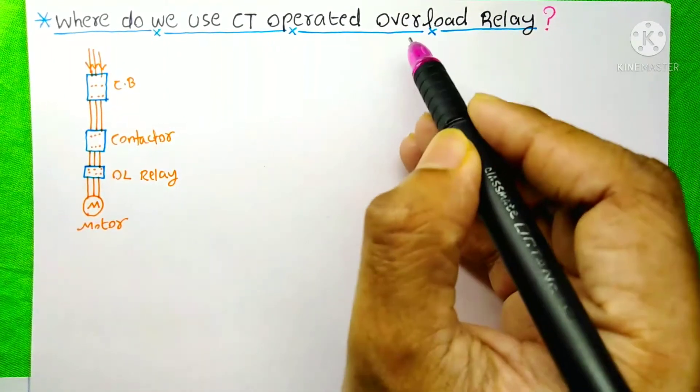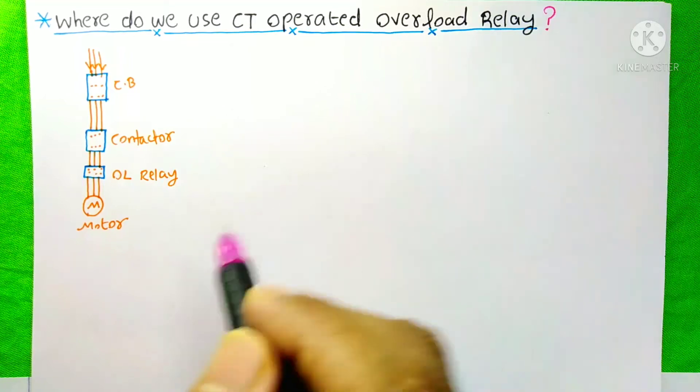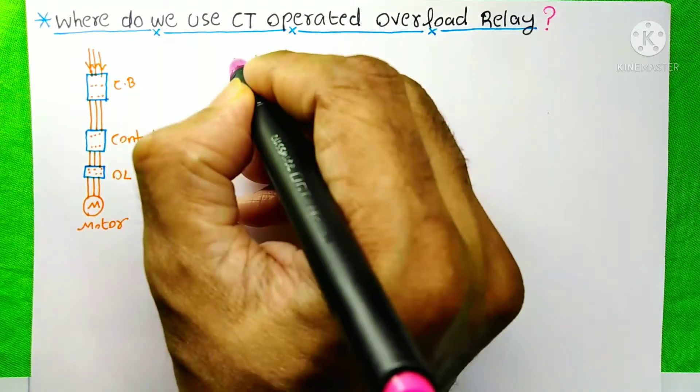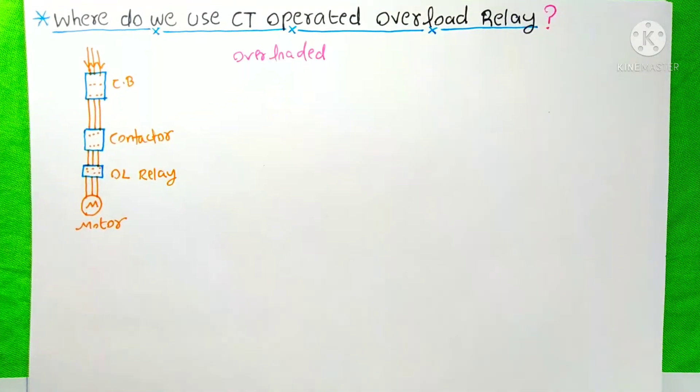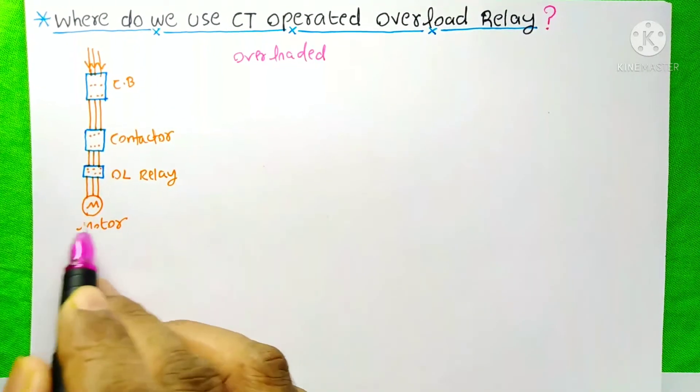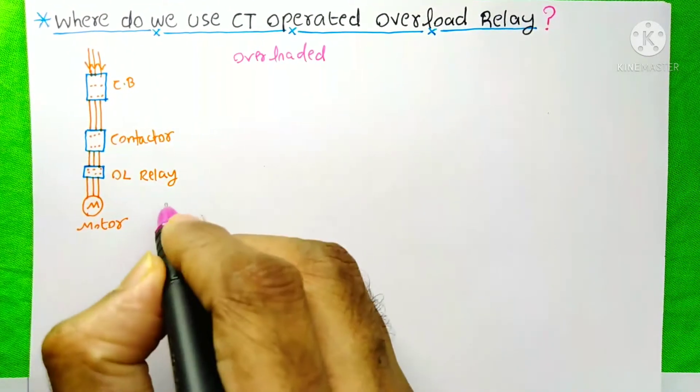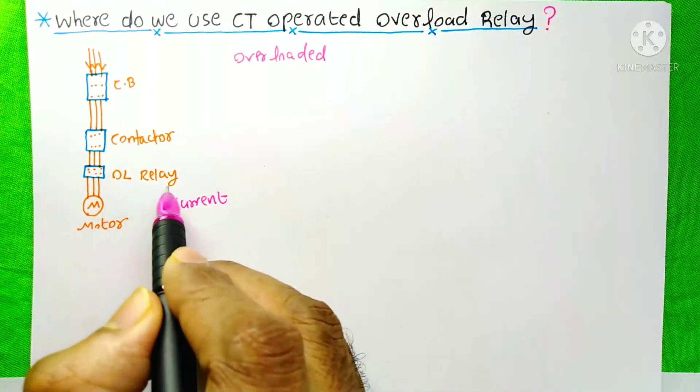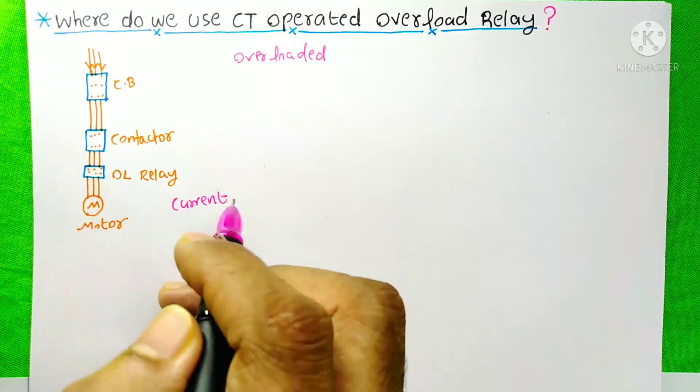You know, we use the overload relay to protect our motor or equipment from overloaded conditions. It means whenever this motor consumes more current than its rated capacity, at that time this overload relay trips the circuit.